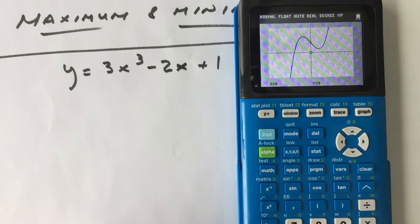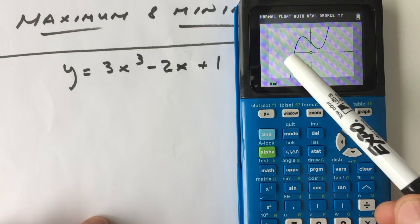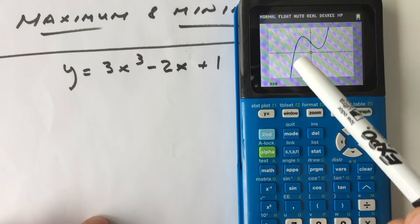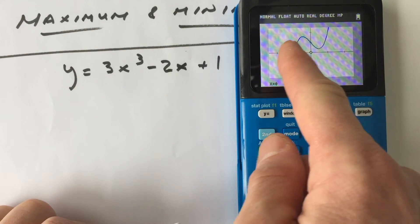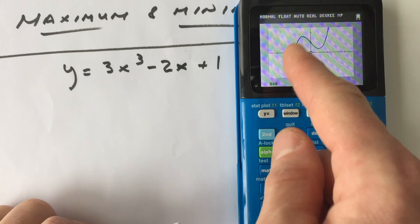So now what we're interested in with the relative maximum and the relative minimum is where the graph bends. So you see this top of the hill here on the left? This point right here where it bends, that's the highest point relative to the points on either side of it. So where that graph changes direction, that's going to be the high point.